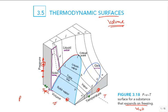Now, where are the two-phase regions? The easiest one to identify is the dome — there's the line of saturated liquid and the line of saturated vapor going down. From the triple line, between saturated liquid and saturated vapor, is all a two-phase region. The substance there is liquid-vapor, and anywhere in that region it can exist in equilibrium.